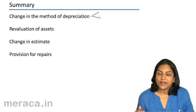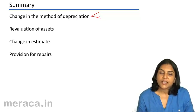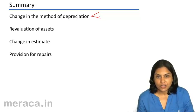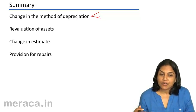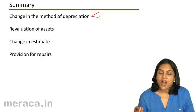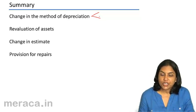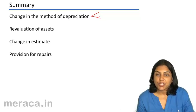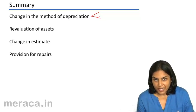If there is a downward revaluation of an asset, it is passed through the profit and loss account. So, asset account is credited and profit and loss account is debited. If after a downward revaluation, there is a subsequent upward revaluation of the asset,